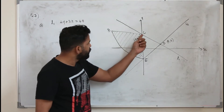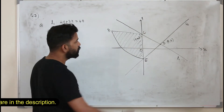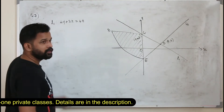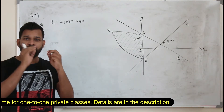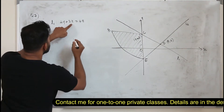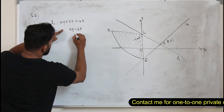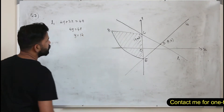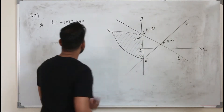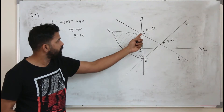Here they want you to find the y-coordinate of point C. The y-coordinate is basically the y-intercept of this line L1. Whenever a curve crosses the y-axis you replace x by 0. So putting x equals 0, 4y equals 48, so y is 12. This point will be (0, 12), and the y-intercept of L1 is 12.